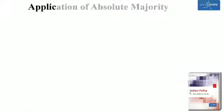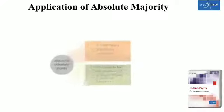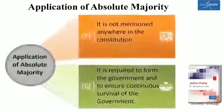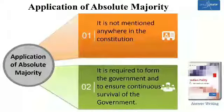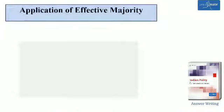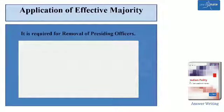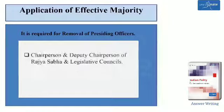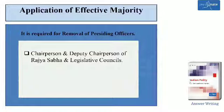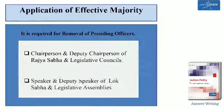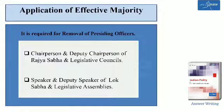Application of Absolute Majority. Absolute majority is not mentioned anywhere in the constitution. It is required to form the government and it ensures continuous survival of the government. Application of Effective Majority. Effective majority is required for removing the presiding officers such as Chairperson and Deputy Chairperson of Rajya Sabha and Legislative Councils, and Speaker and Deputy Speaker of Lok Sabha and Legislative Assemblies.